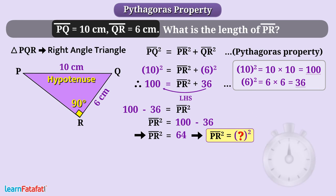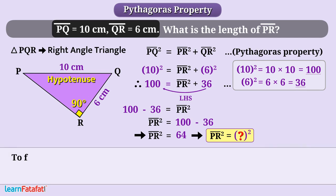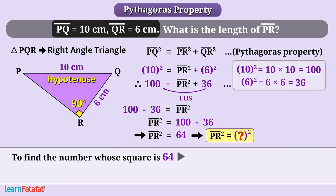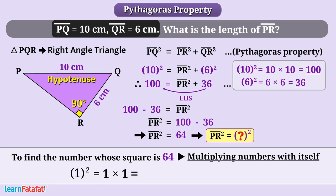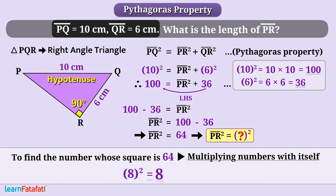Now we have to find the length of PR whose square is 64. To find the number whose square is 64, we multiply numbers by themselves: 1 squared equals 1, 2 squared equals 4, and so on. We find that 8 squared is equal to 8 multiplied by 8, which is 64. That means PR is equal to 8 cm. I hope you can now solve problems based on Pythagoras property. Thanks for watching this video.